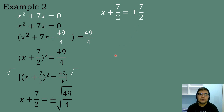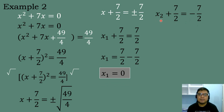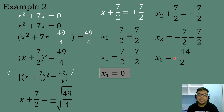To find the two roots: for x₁, we have x plus 7 over 2 equals positive 7 over 2. Transposing 7 over 2 to the other side gives 7 over 2 minus 7 over 2, so the first root equals 0. For x₂, we have x plus 7 over 2 equals negative 7 over 2. Transposing gives negative 7 over 2 minus 7 over 2, which equals negative 14 over 2, so x₂ equals negative 7.